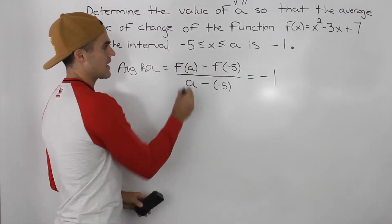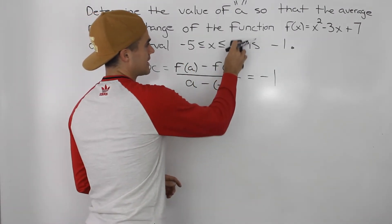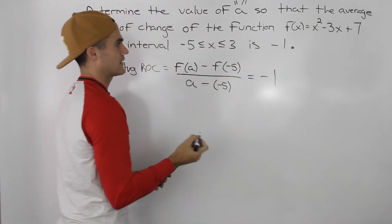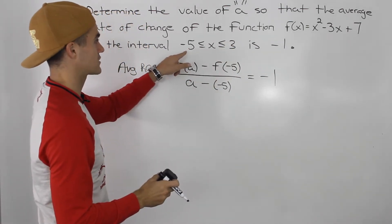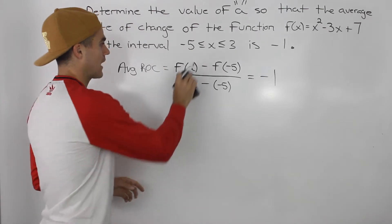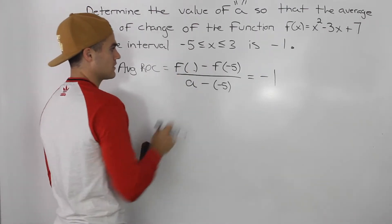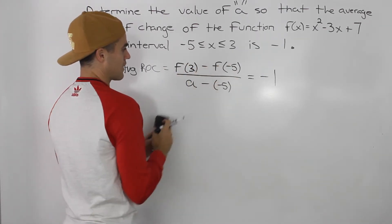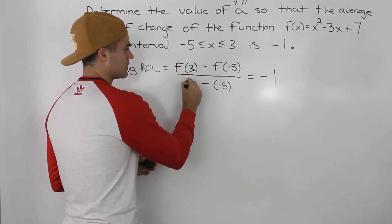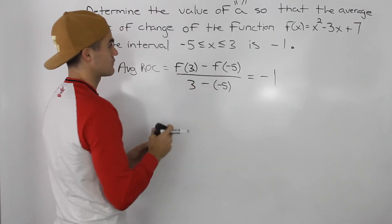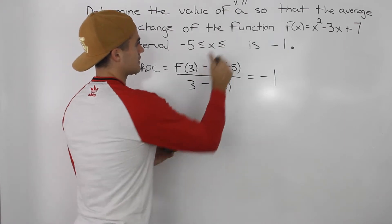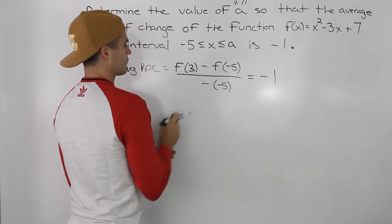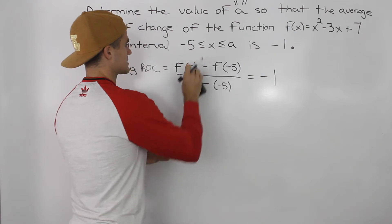Don't get confused with this a here. If this a instead was a 3, and we were finding the average rate of change between x = negative 5 and 3, then we would have f(3) minus f(negative 5) all over 3 minus negative 5. But because this is an a, we'll have a's instead of 3's.